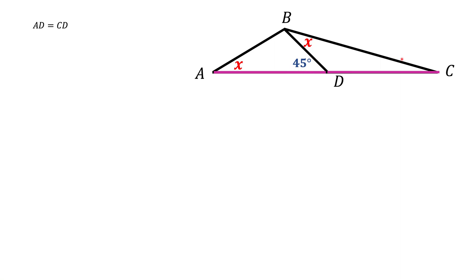And angle C should be 45 minus X. The other thing we want to know is what this angle B is. Angle B is 180 minus this angle and minus this angle, and that gives us 135 degrees.